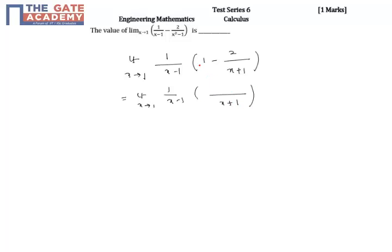This simplifies to x plus 1 minus 2, which is x minus 1. So x minus 1 and x minus 1 get cancelled. Substituting the limit, this is equal to 1 over 1 plus 1, which equals 0.5.